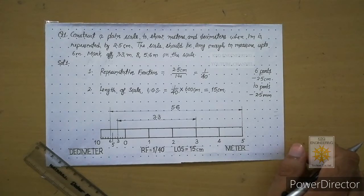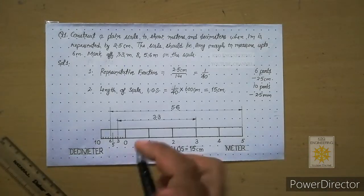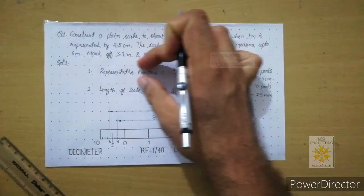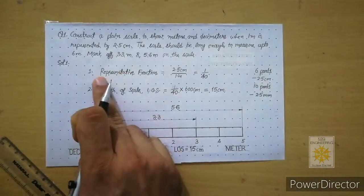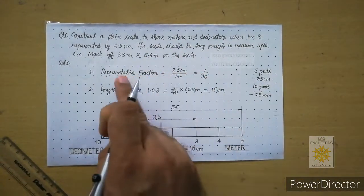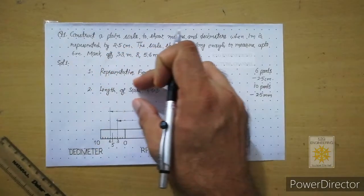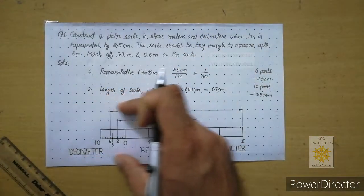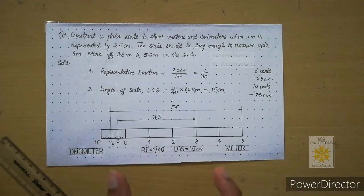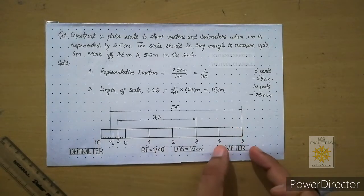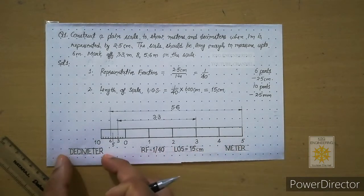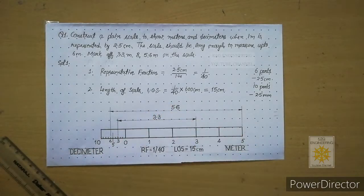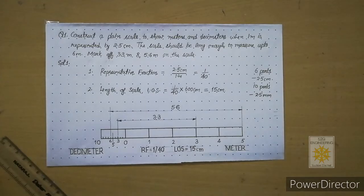This should be your complete presentation of the plane scale. To summarize: first show the calculation of representative fraction in pencil using your handwriting; below that write the calculation of LOS in handwriting; then below these two calculations show your construction and answers. In the answers, use letter writing only for numerals and letters. I hope the construction of this problem is clear — thank you very much.